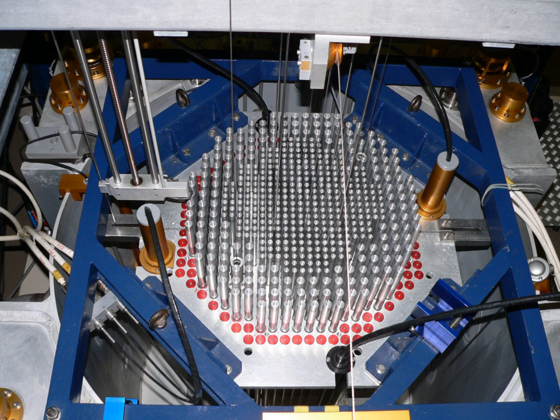In thorium fuel cycle thorium-232 absorbs a neutron in either a fast or thermal reactor. The thorium-233 beta decays to protactinium-233 and then to uranium-233, which in turn is used as fuel. Hence, like uranium-238, thorium-232 is a fertile material.